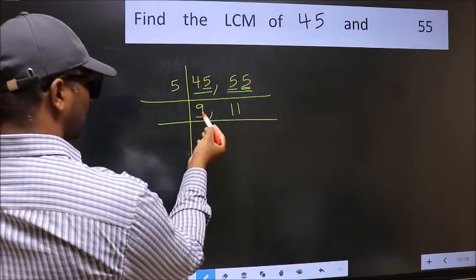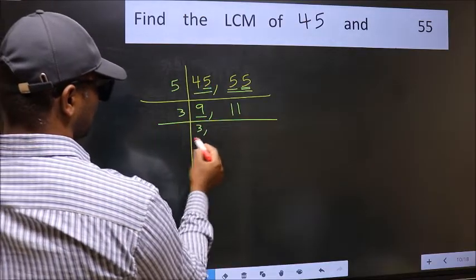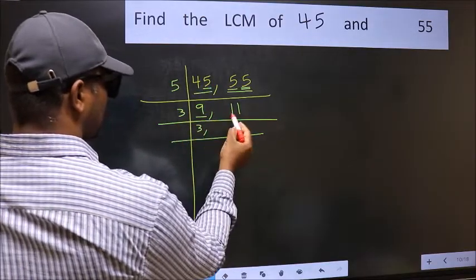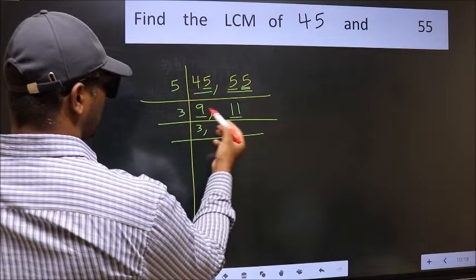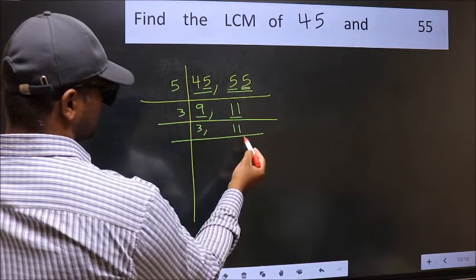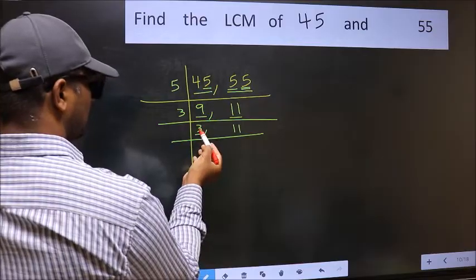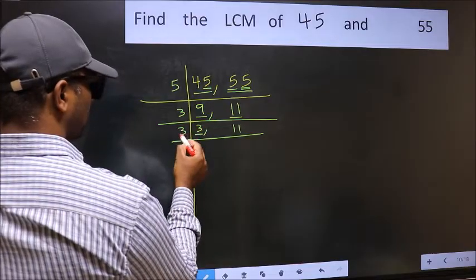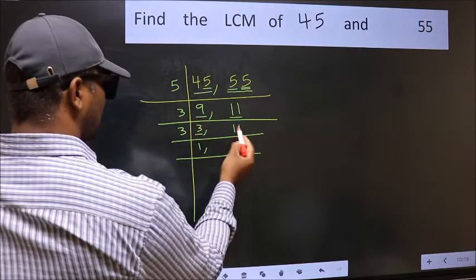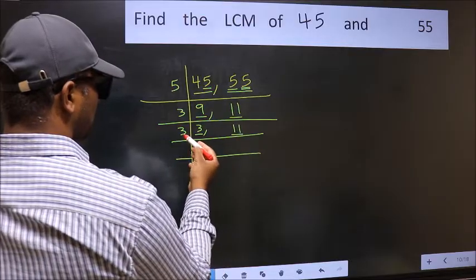Now here we have 9. 9 is 3 times 3, so 9 is divisible by 3. The other number is 11 — not divisible by 3, so you write it down as it is.